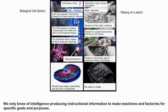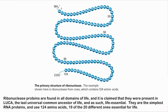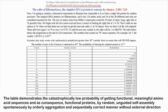Ribonuclease proteins are found in all domains of life and are claimed to have been present in LUCA — the Last Universal Common Ancestor — and as such are life-essential. They are among the simplest proteins, using 124 amino acids, 19 of the 20 different ones essential for life. The table demonstrates the catastrophically low probability of getting functional, meaningful amino acid sequences — and as a consequence, functional proteins — by random, unguided self-assembly, spontaneously and in sequentially correct manner without external direction.